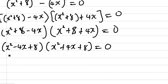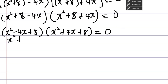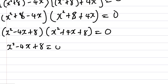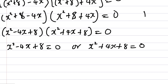When the product of two things is zero, one of them must be zero. So we have: X squared minus 4X plus 8 equals zero, or X squared plus 4X plus 8 equals zero. Now, is either of these factorisable? Checking 8: factors give us 6 when added, so it's not factorisable. We'll solve using the quadratic formula.